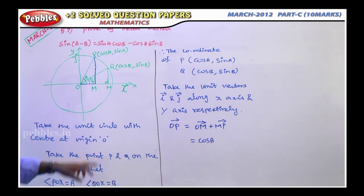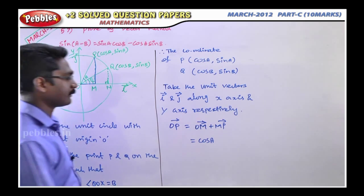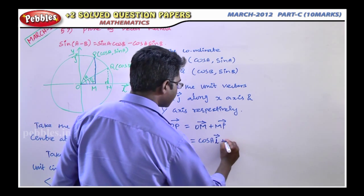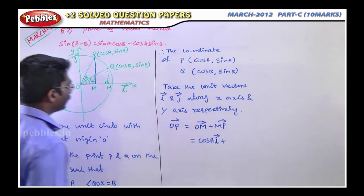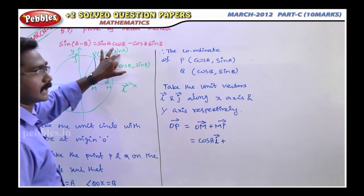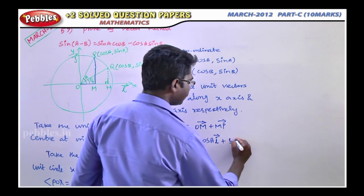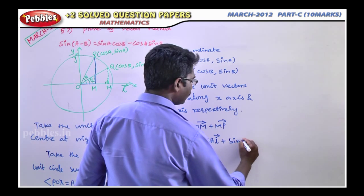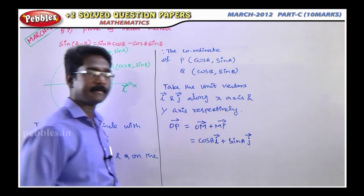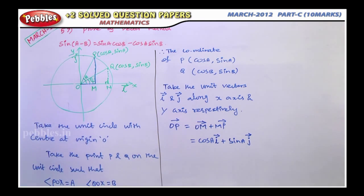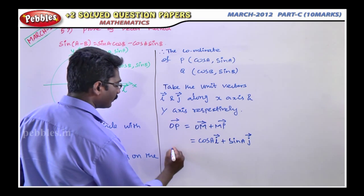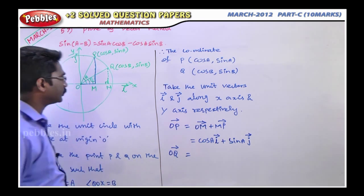Along the x-axis direction is the i-vector. Plus MP: the y-value of point P is sin A, in the y-axis direction, which is the j-vector direction. Therefore OP vector equals cos A i-vector plus sin A j-vector.